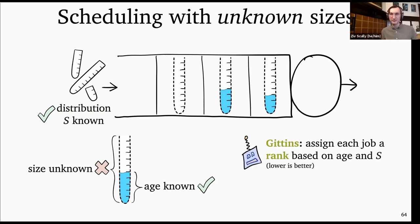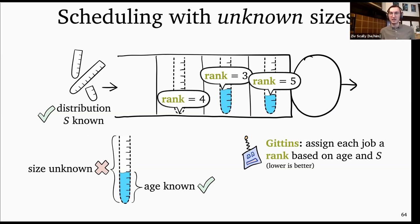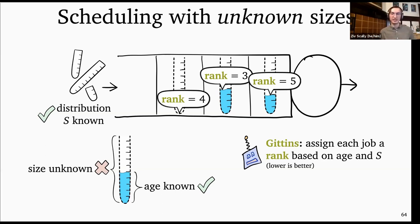Scheduling with unknown job sizes basically amounts to using the ages of each job and the overall size distribution S to make a smart scheduling decision. The policy that does this best is one called the Gittins policy. It assigns each job a rank or priority based on that job's age and the size distribution S — using the convention that lower rank is better. Gittins always serves the job of minimum rank at every moment in time. One can show that Gittins minimizes mean response time in this setting with unknown sizes.